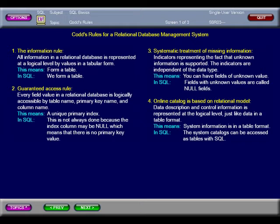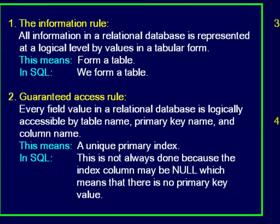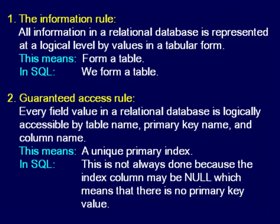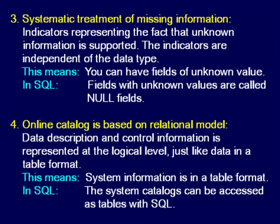Dr. Codd has only 12 rules for relational database. Most database vendors do not implement all 12 rules. Here are his 12 rules stated simply. Rule 1: Data is placed in the form of a table. Rule 2: Data has a table name, column names, and a primary key. Rule 3: You can have fields of unknown value called null.